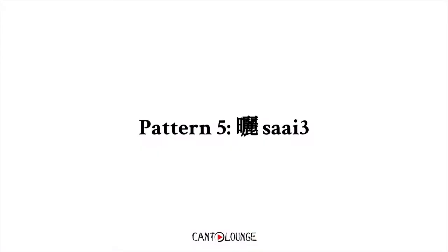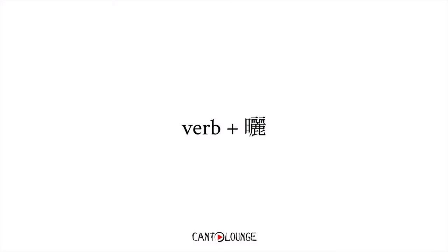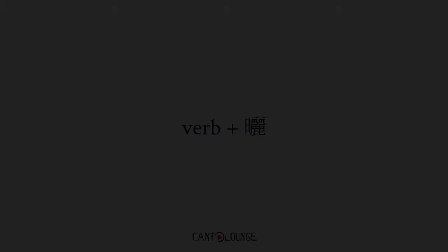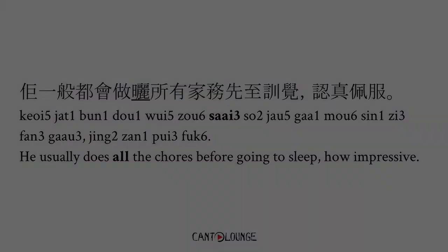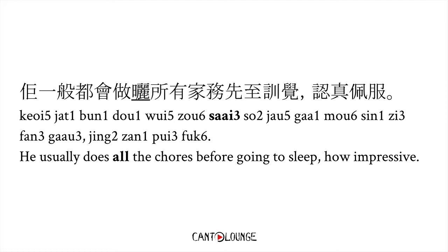The final aspect marker we're going to discuss today is 曬. As usual, we just add it after the verb. 曬 is actually quite similar to 完 in the sense that you're indicating something that's completed, but you're not indicating one thing that's completed — you're indicating a group of things that are completed. For example: 她一般都會做曬所有家務,才睡覺,認真佩服 — she usually does all the chores before going to sleep, how impressive. Chores is in the plural, so there's probably a bunch of them. You can use 曬 here, whereas if it was just one chore, you can't use 曬.